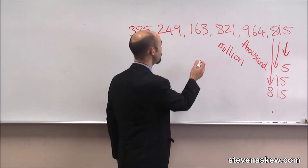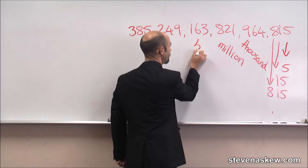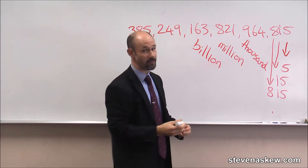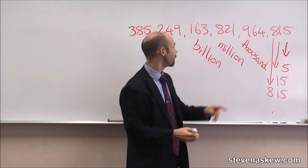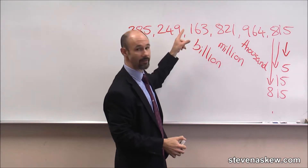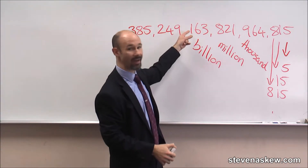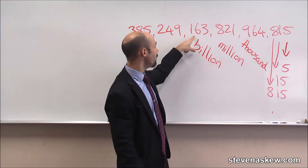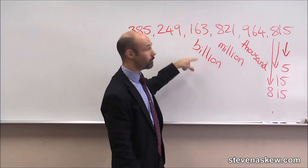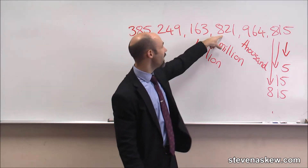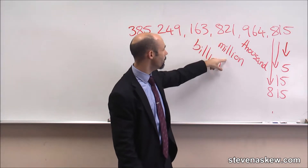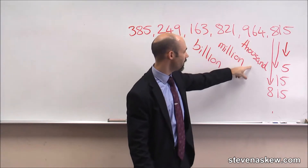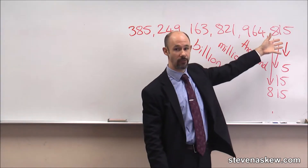Next, of course, we have billion. Exactly the same thing. We have the unit, the ten, the hundred — one hundred and sixty-three. And we add these words. One hundred and sixty-three billion, eight hundred and twenty-one million, nine hundred and sixty-four thousand, eight hundred and fifteen.